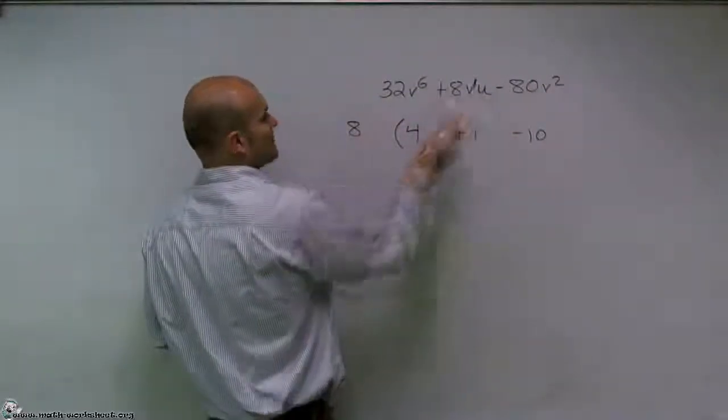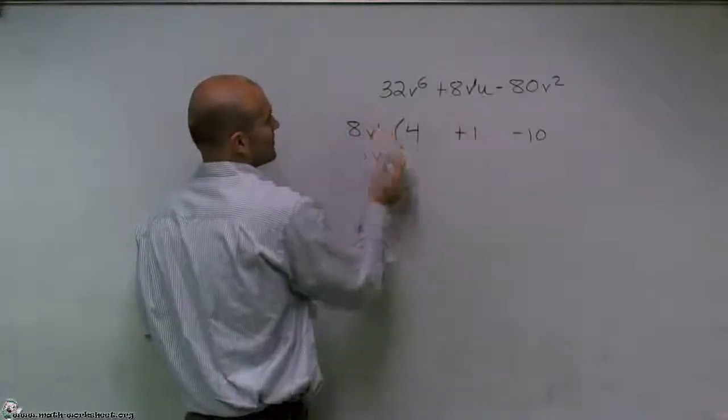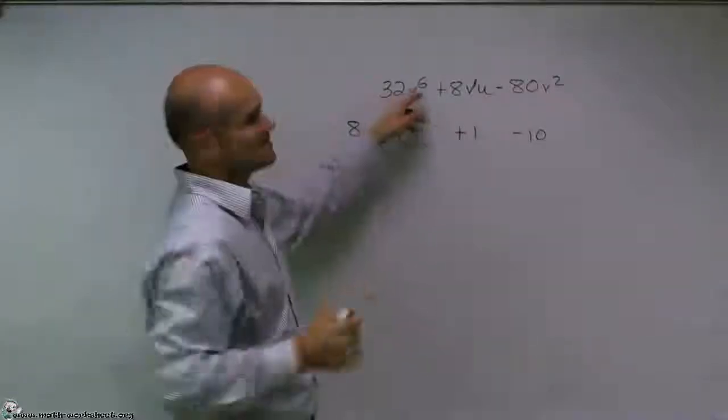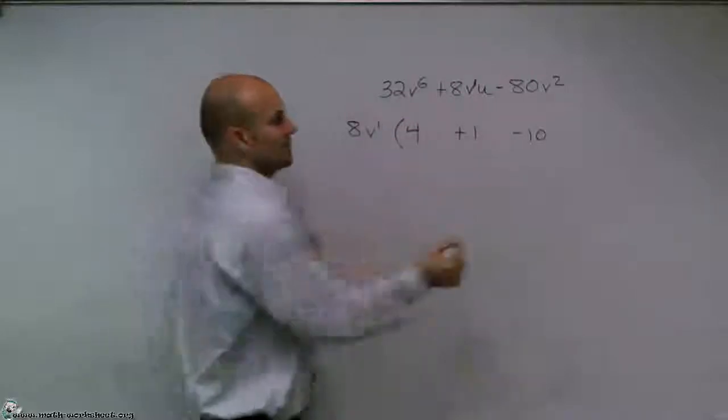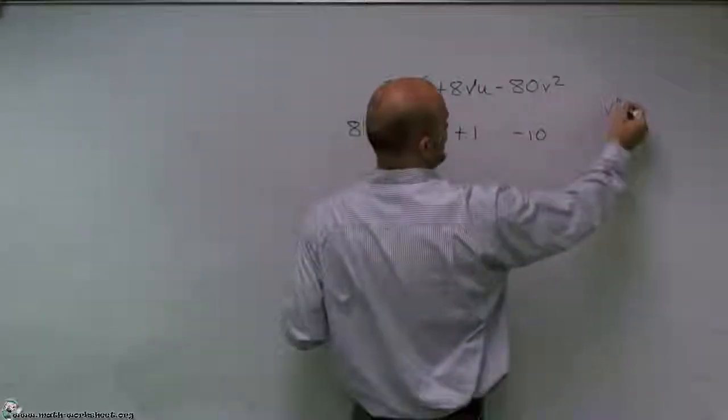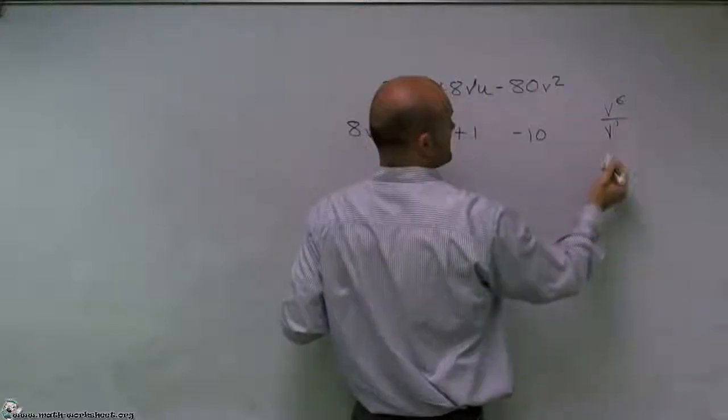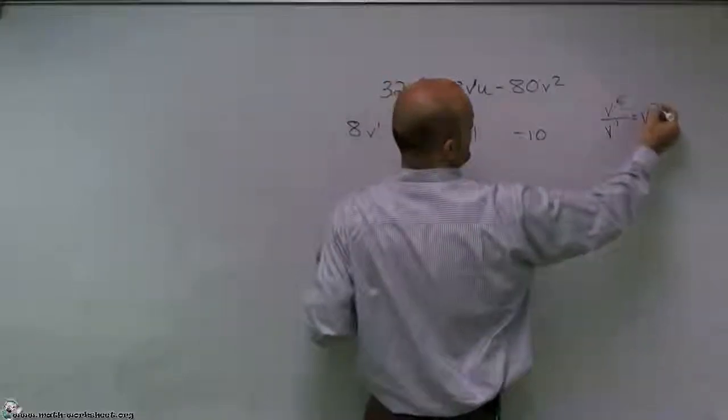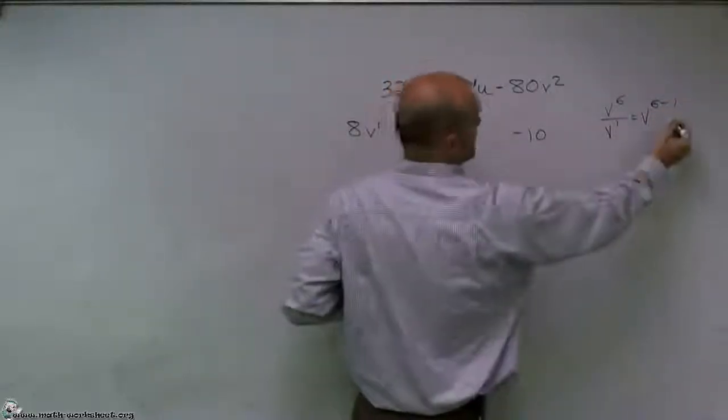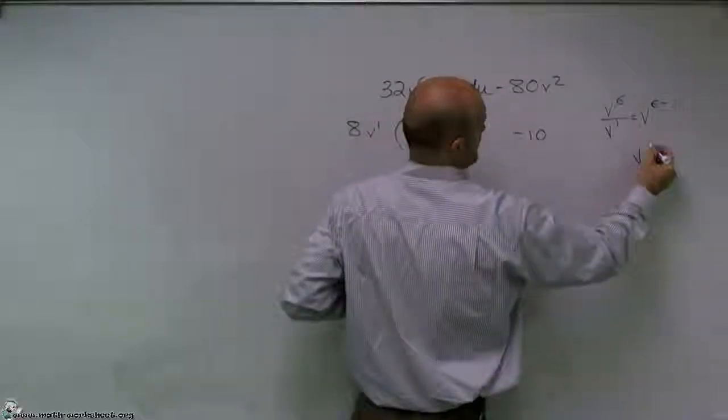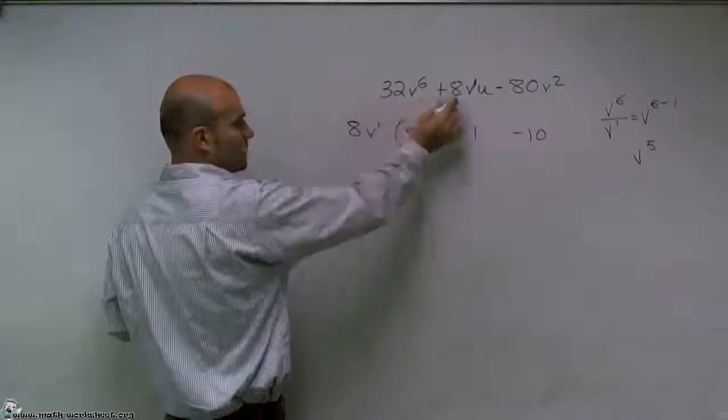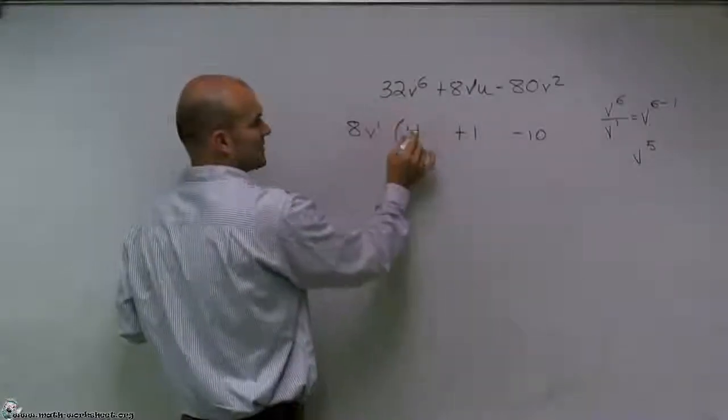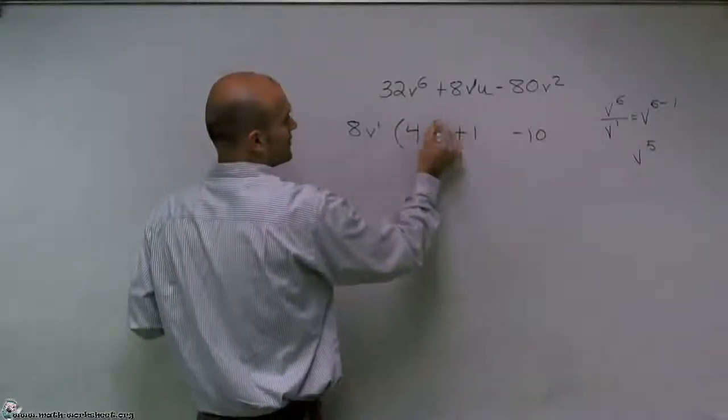So if I factor out a V to the first power, what I'll have is V to the sixth divided by V to the first. We're using our rules of exponents. So V to the sixth divided by V to the first is equal to V to the sixth minus one, which equals V to the fifth. So when I factor out a V to the first, I'm left with a four V to the fifth.